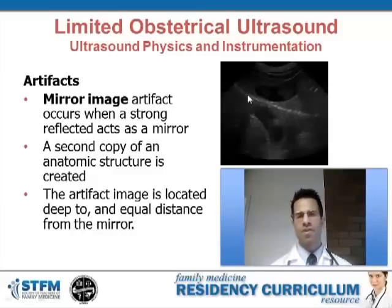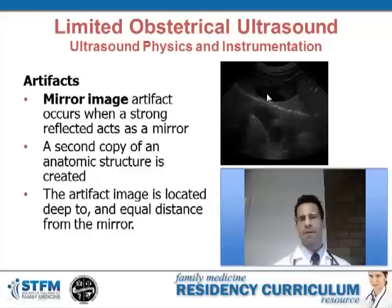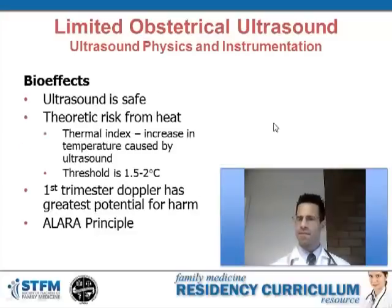A mirror image artifact is created when we have a strong reflector. The strong reflector creates a second copy of the anatomy. The second copy is always in line with the ultrasound beam, always deep to or further away from the probe than the actual anatomy, and always equidistant from the reflector as the actual anatomy.